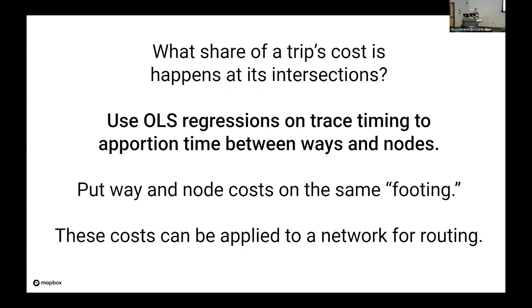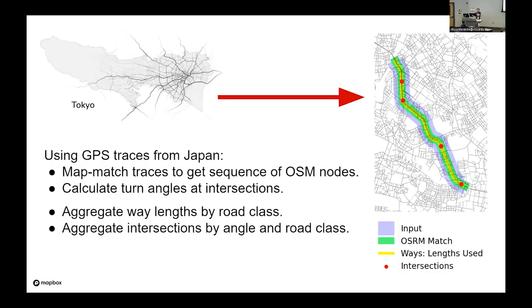And these are costs that can be applied into a routing engine. These are costs that you can intuitively understand, but as you'll see there's a certain amount of complexity in how the OLS fit treats the data. So this is a different way of trying to understand how much each turn costs.